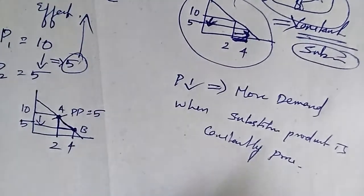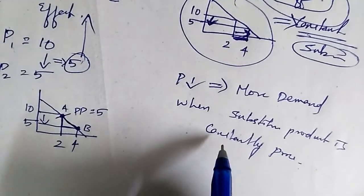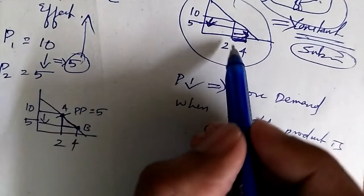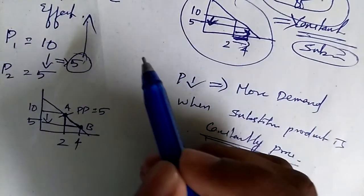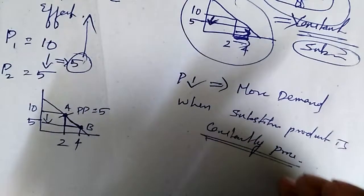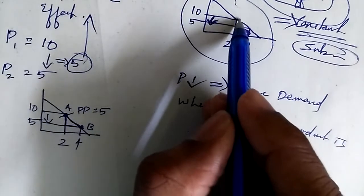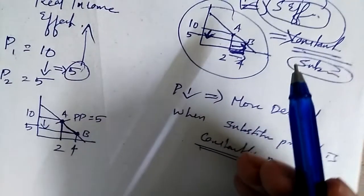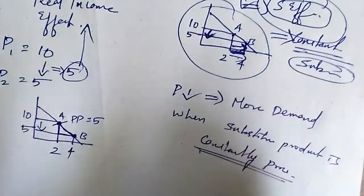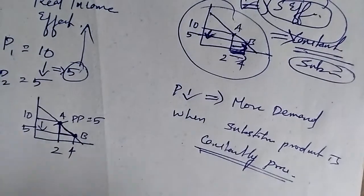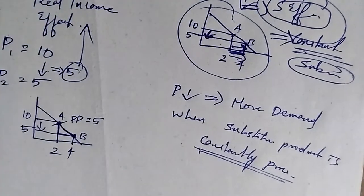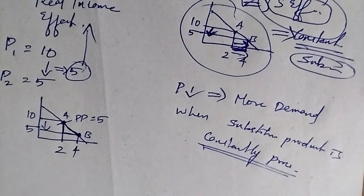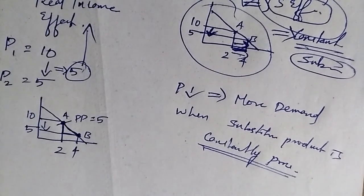When the substitute product is constantly priced, you will buy more quantity of the same product for which the price has been decreased. This is why your demand curve is sloping downward — because of the substitution effect. These are the two main reasons why your demand curve slopes downward. Thank you, thanks for watching. Please subscribe if you like my videos.